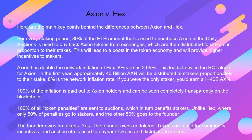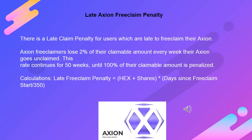The founder owns no tokens — yes, the founder owns no tokens. Tokens are used for community incentives, and auction ETH is used to buy back tokens and distribute to stakers. There is a late claim penalty for users which are late to free claim their Axion. Axion free claimers lose 2% of their claimable amount every week their Axion goes unclaimed. This rate continues for 50 weeks, until 100% of their claimable amount is penalized.